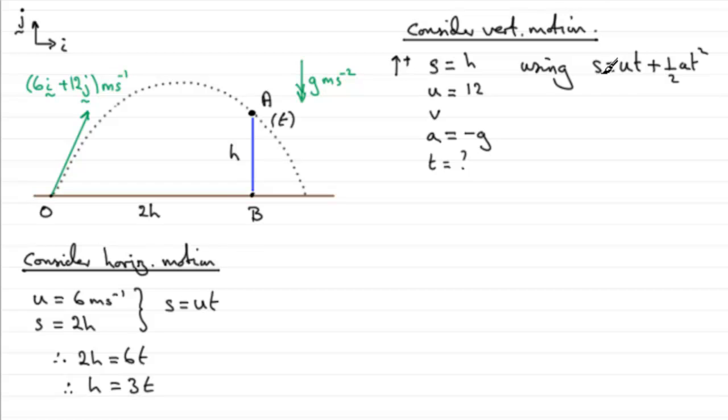So we can now substitute our values in. For S, we've got H. So we've got H equals U, 12, times T, which is what we're trying to find, plus a half times A. Well, it's going to be plus a half times minus 9.8, times now T squared. Now we know what H is. We know that H from over here was 3T. So we can substitute 3T into here. So if we do that, we therefore have 3T equals 12T, and then we can say half of minus 9.8 is minus 4.9, so we've got minus 4.9T squared.